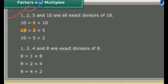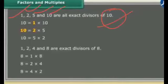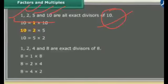So here we have seen that 1, 2, 5 and 10 completely divide the given number 10. Therefore, a factor divides a number completely without leaving any remainder. So 1, 2, 5 and 10 are factors of 10 — they divide completely with remainder 0.